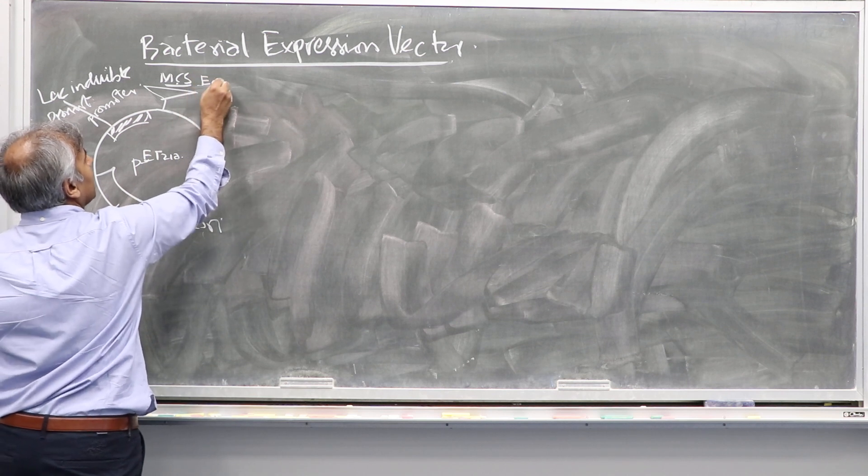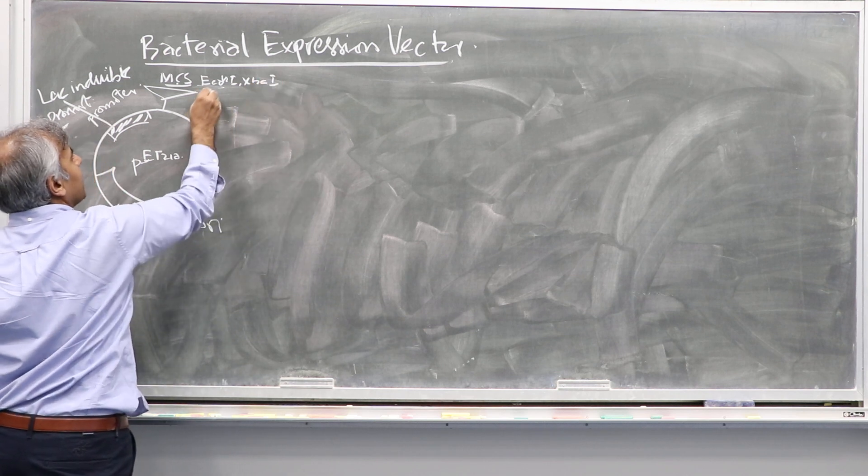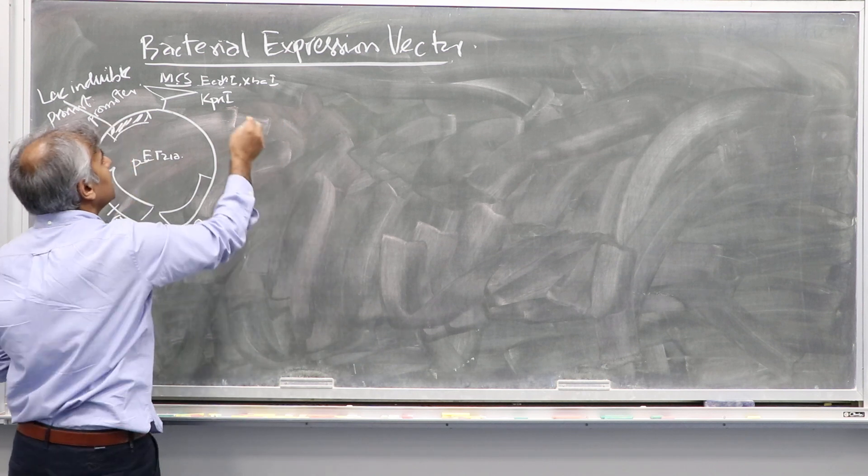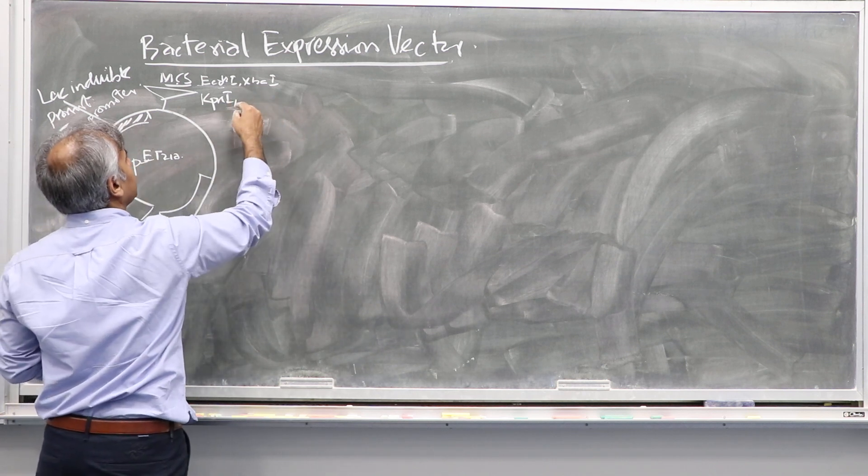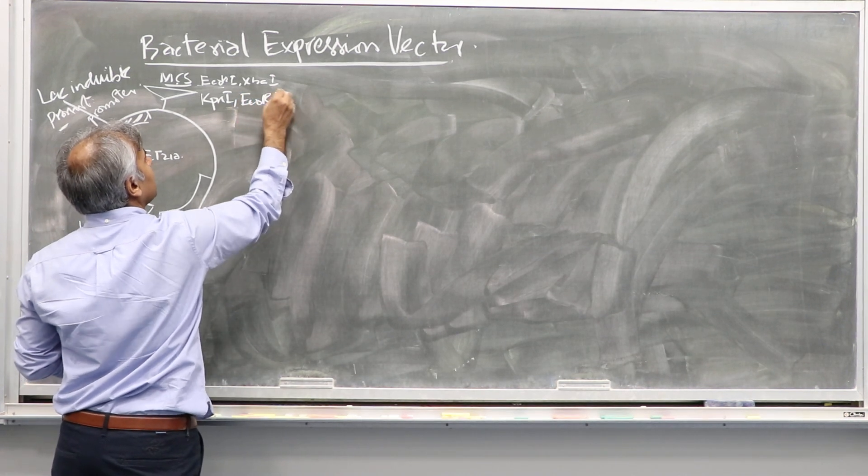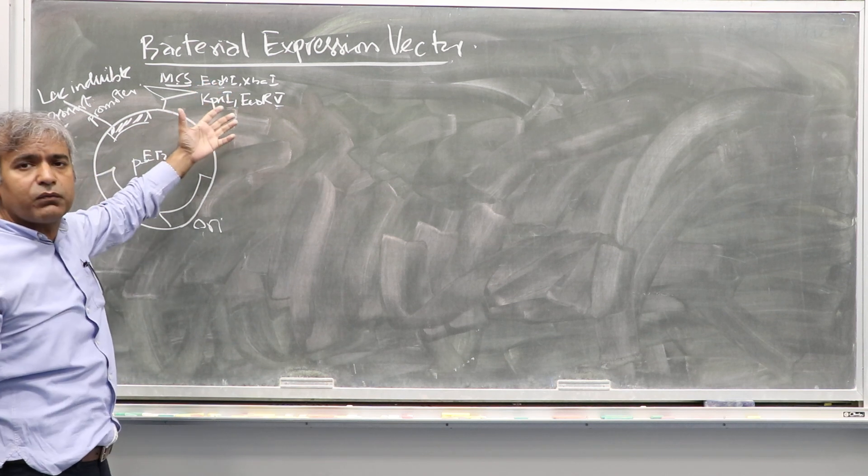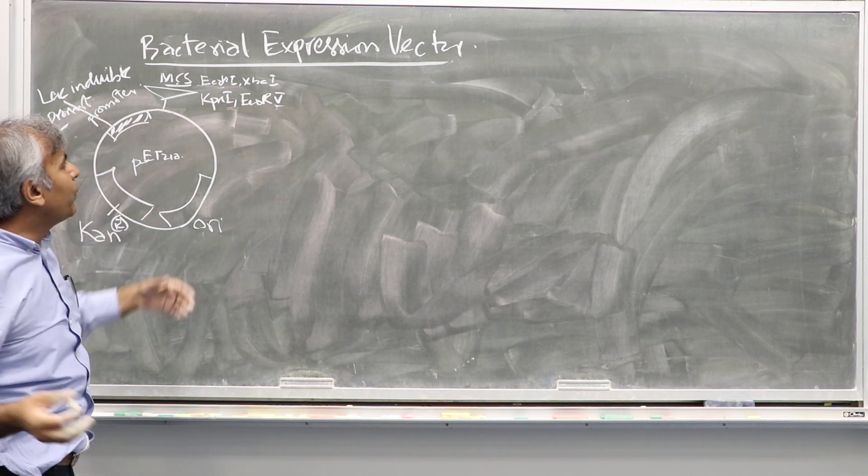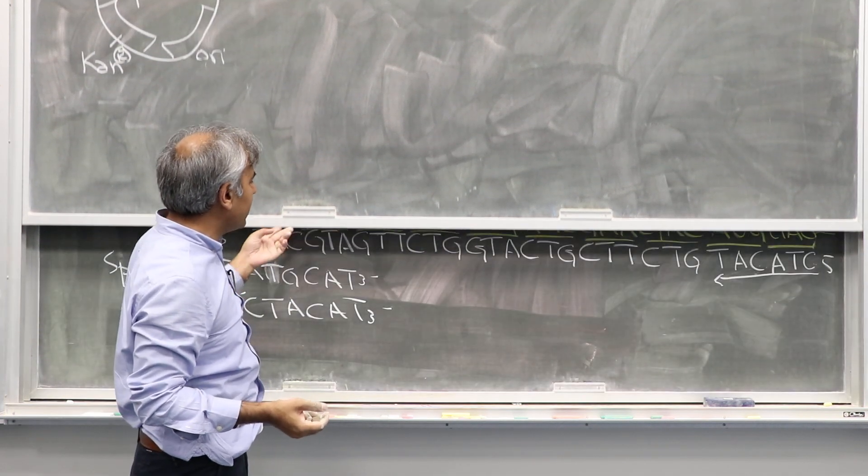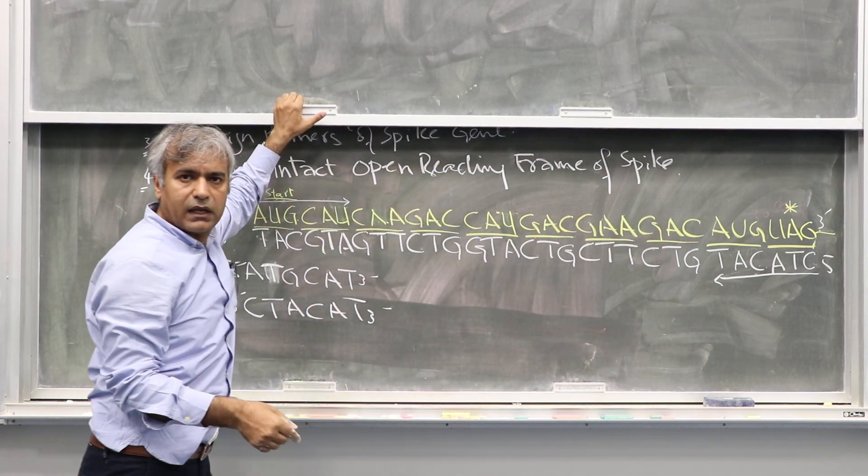So let's say you have here multiple cloning sites like EcoRI, XbaI, KpnI - these are restriction enzymes we talked about earlier - EcoRV and so on. These are unique restriction enzymes, and you pick one or two of them which are of interest because they do not cut anywhere in the spike gene.